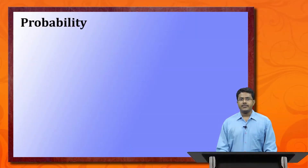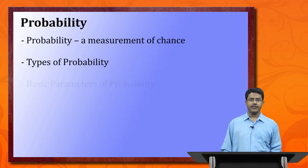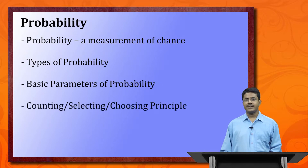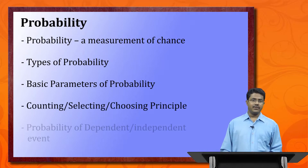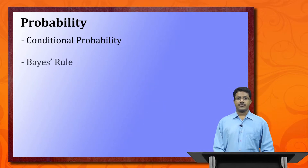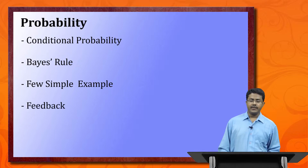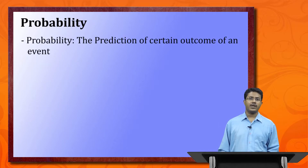Hello students, we will discuss today probability. However, probability is a very large topic, so we will discuss the simple rules or basics. Today we follow: probability and types of probability, basic parameters of probability, counting, selecting and choosing principles, probability of dependent or independent events, conditional probability, various rules, a few simple examples, and last, feedback.